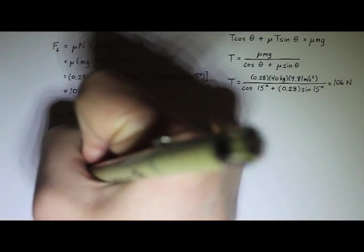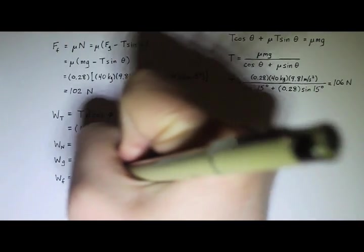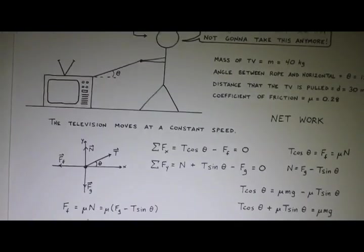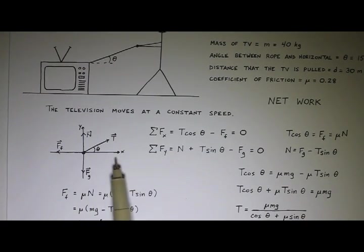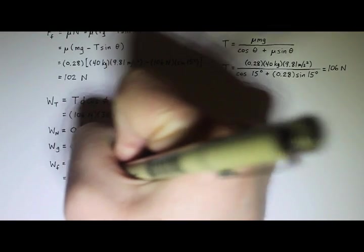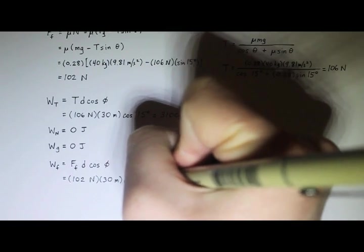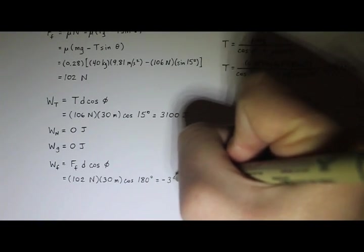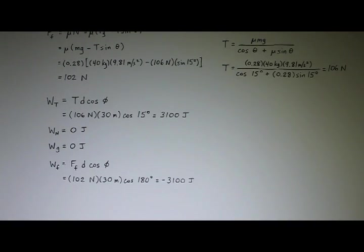The last one is work done by friction. That's the force of friction times the displacement times the cosine of the smaller angle between the friction vector and the displacement. Friction points along the negative x-axis and my displacement points along the positive x-axis, so the angle between them is 180 degrees. You have to be careful of the angle — if you just plug in 15 degrees, you would get the wrong answer. The force of friction was 102 N times 30 m times cosine 180° gives negative 3,100 joules. Work can be negative — that's totally okay.